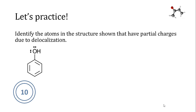Let's do one final practice problem. Identify the atoms in the structure shown that have partial charges due to delocalization. Once I start the timer, you will have 10 seconds. If 10 seconds is not long enough, feel free to pause the video. The first thing we want to do is draw the resonance structures that would result from the delocalized electrons. This molecule happens to have five resonance contributors, including the one shown. Here are the other four.